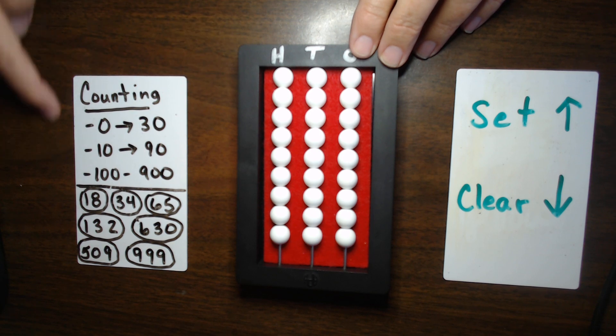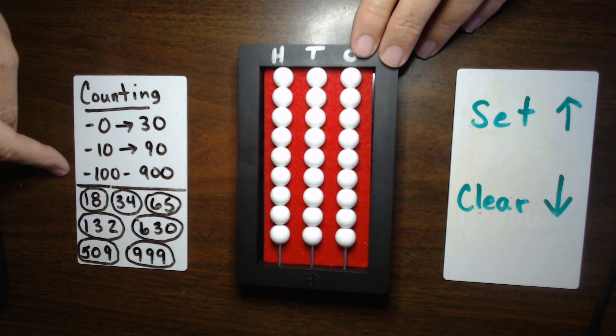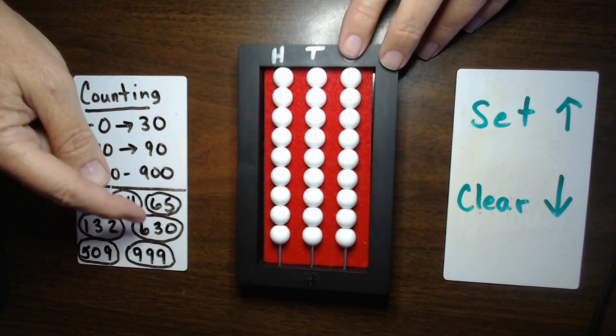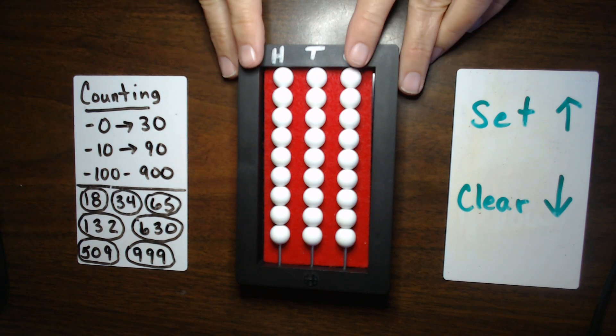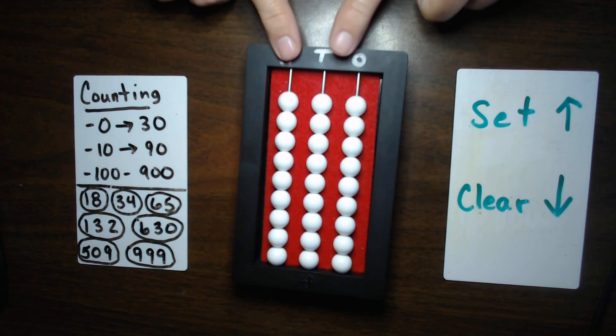Today, we're going to take a look at counting 0 through 30 by 1s. We're going to count by 10s, and then we're going to count by 100s. After that, I think you'll have a pretty good feel for it, and we'll practice setting these numbers. Alright, so I'm going to clear my Abacus.